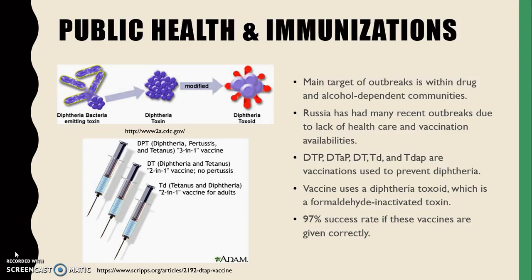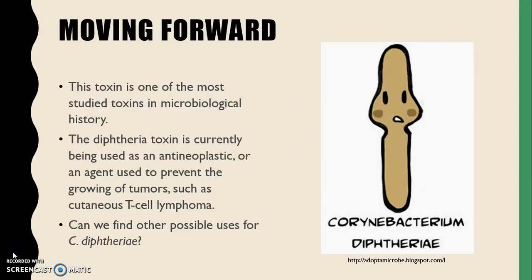The vaccine uses diphtheria toxoid, which is a formaldehyde-inactivated toxin. If these vaccines are given correctly, there is a 97% success rate. This toxin is one of the most studied toxins in microbiological history. The diphtheria toxin can also be used as an anti-neoplastic agent used to prevent the growing of tumors, such as cutaneous T-cell lymphoma. Can we find other possible uses for C. diphtheriae in the future?